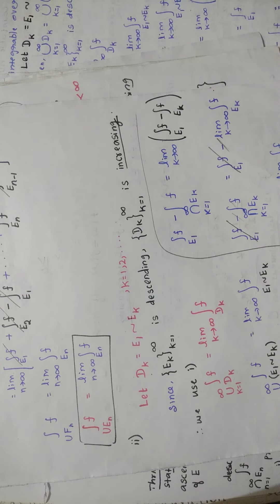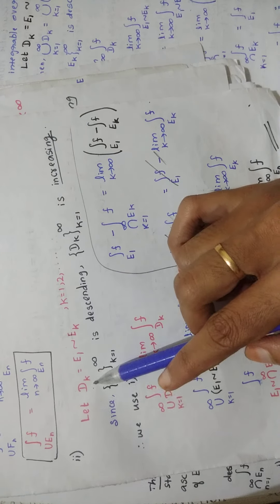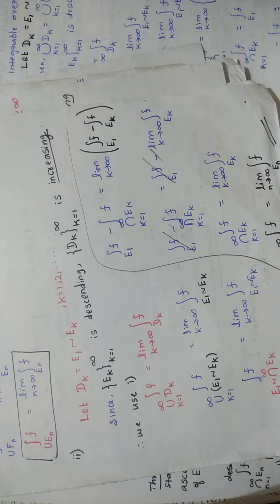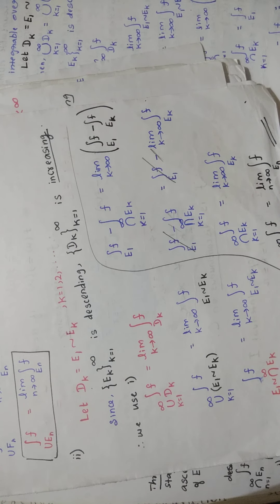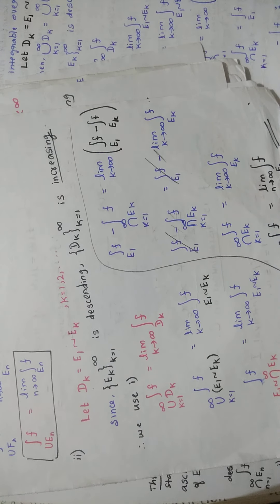Now let's move on to proving the second part, which is very simple. First, you define: let Dk equal to E1 minus Ek, for k equal to 1, 2, and so on. You have to keep all these things in your mind — these are the tasks they test in the examination. If you can recall all these things, you will handle the proof well.